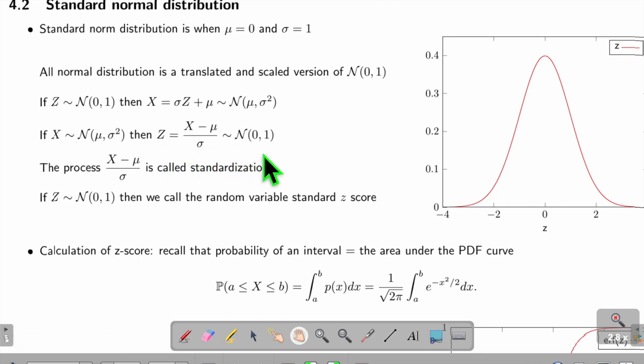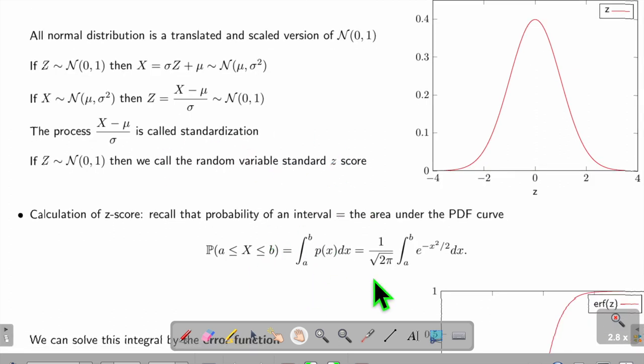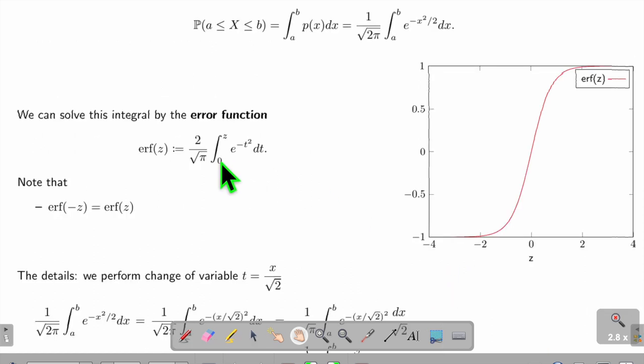The probability of a standard z-score is computed by this integral. This integral has a funny name called the error function.